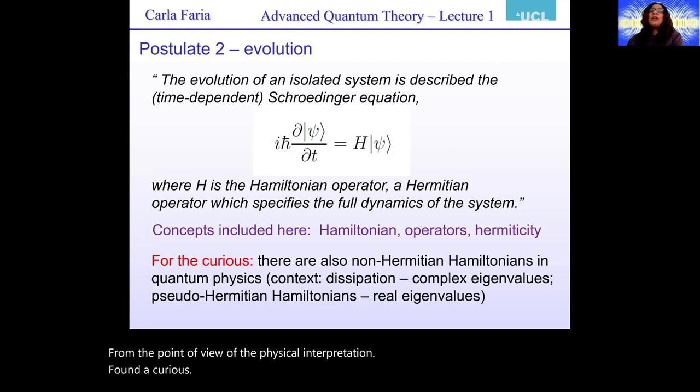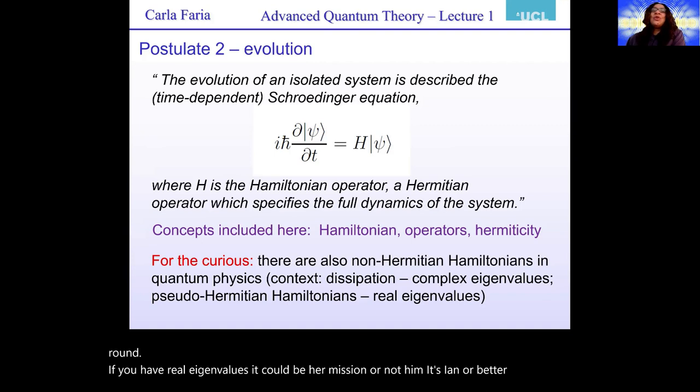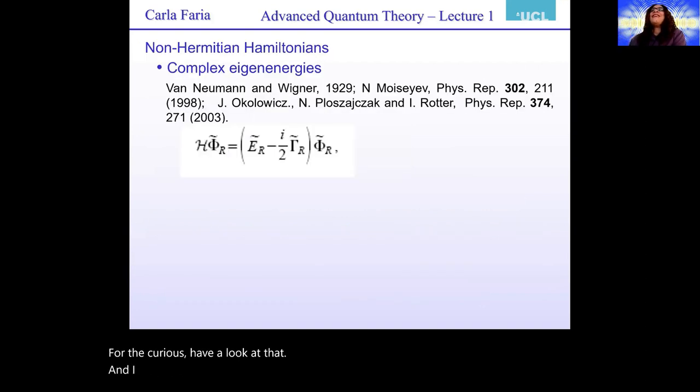For the curious, there are also non-Hermitian Hamiltonians in quantum physics. You are old enough to know that, so I'm telling you now, you are on your fourth quantum mechanics year, so you always hear that the Hamiltonian has to be Hermitian for the eigenvalues to be real, this is wrong. Or better said incomplete. Because if the Hamiltonian is real, or if your Hamiltonian is Hermitian, you know the eigenvalues are real, but if you try to go the other way around, if you have real eigenvalues, it could be Hermitian or non-Hermitian, or better stated, pseudo-Hermitian. So for the curious, have a look at that. And I promise, it's quite interesting.